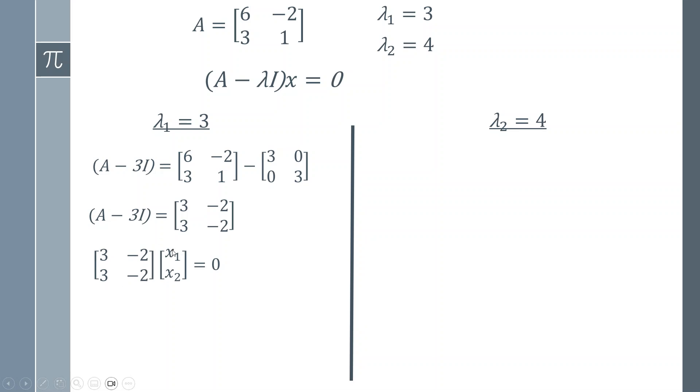So matrix multiplication: 3 times x1 minus 2 times x2, and that equals zero. Now, this equation has an enormous number of solutions. You can just keep finding them over and over. We're just interested in finding one example eigenvector. So what we can do is come up with some value for one of the x's, and then find what the corresponding one is, and then we would get an eigenvector.